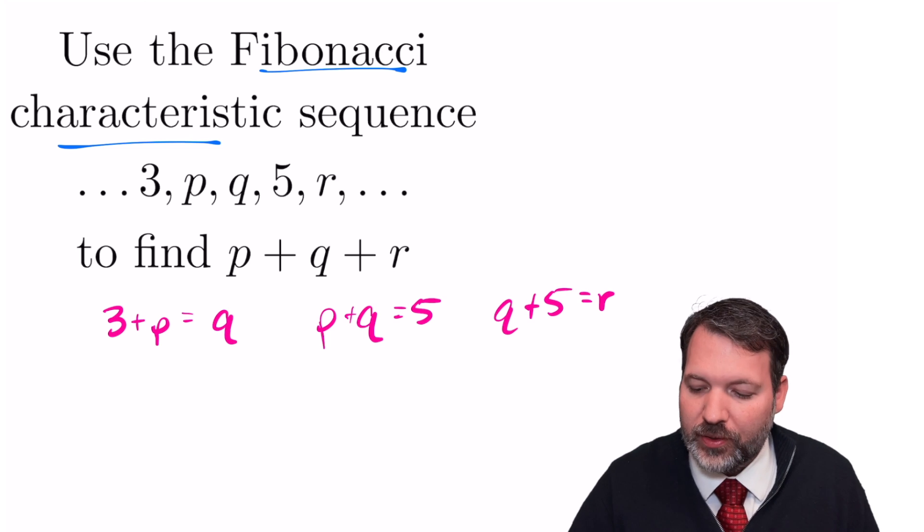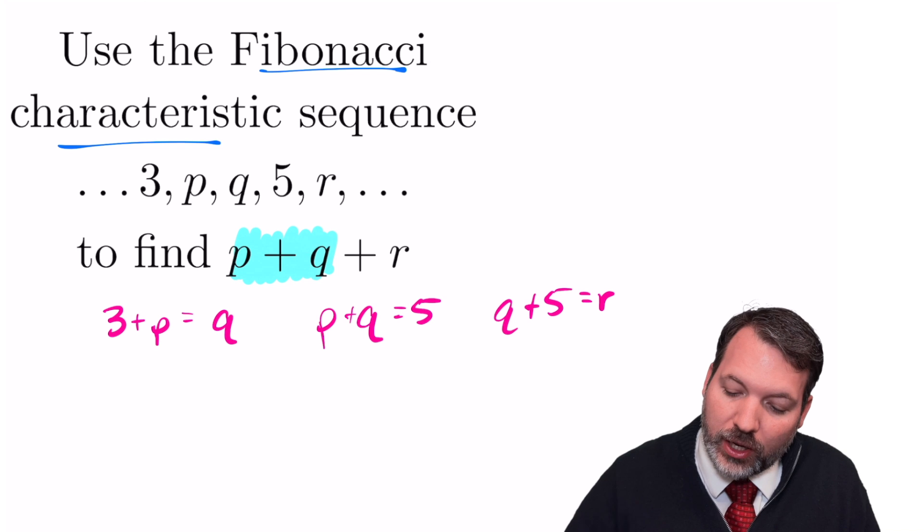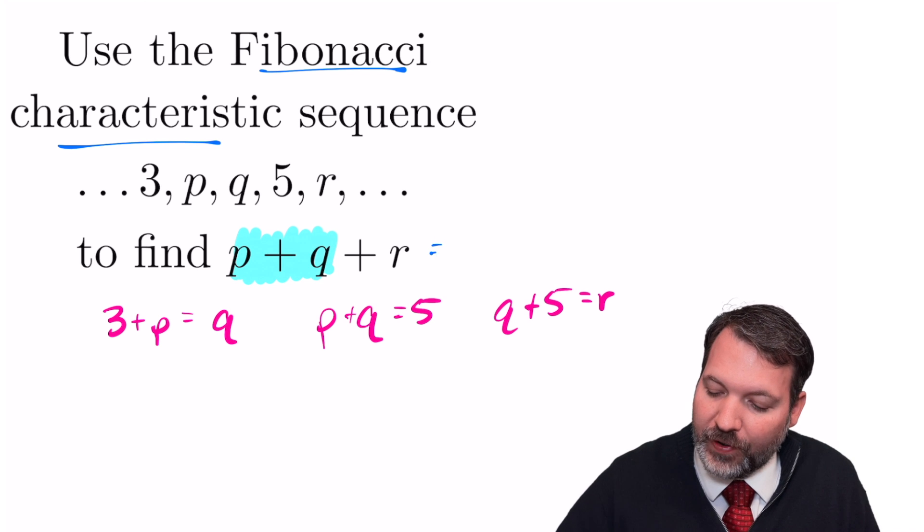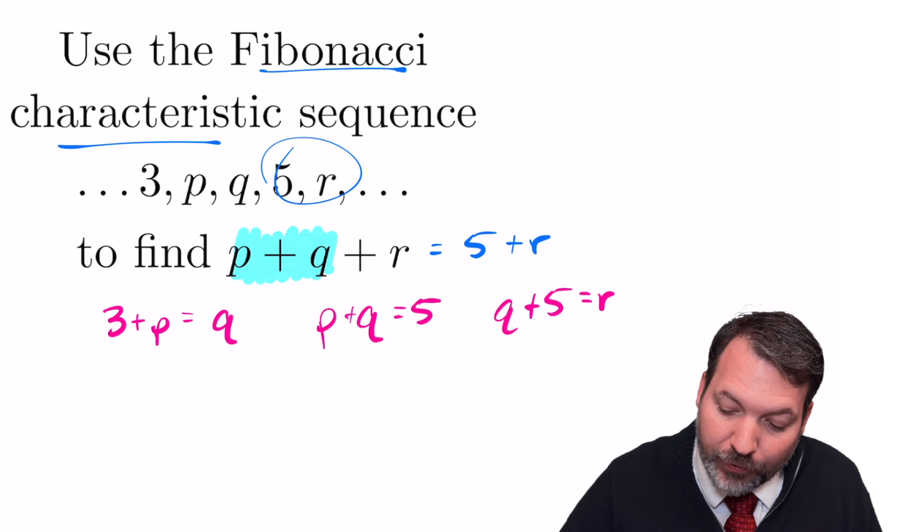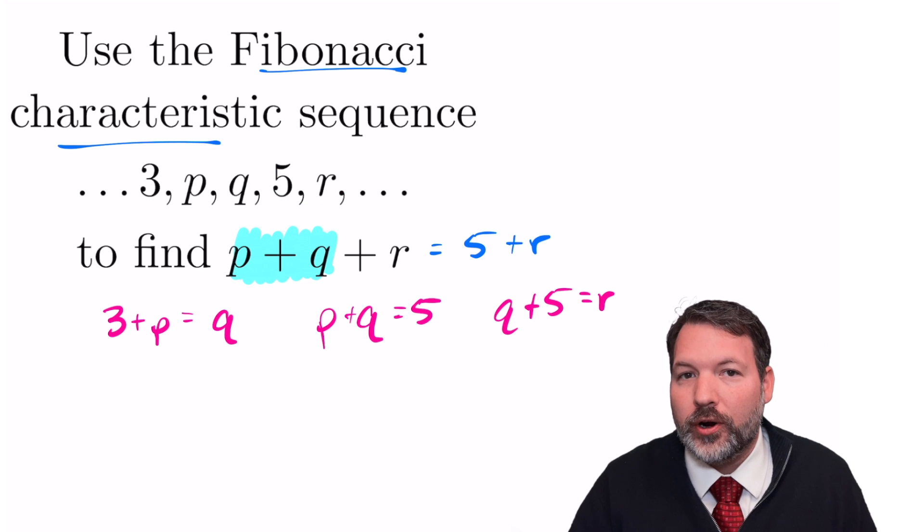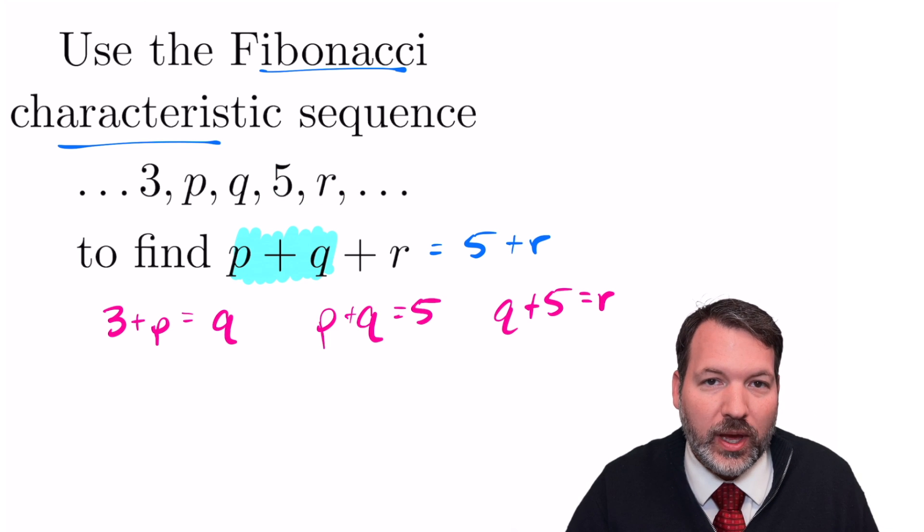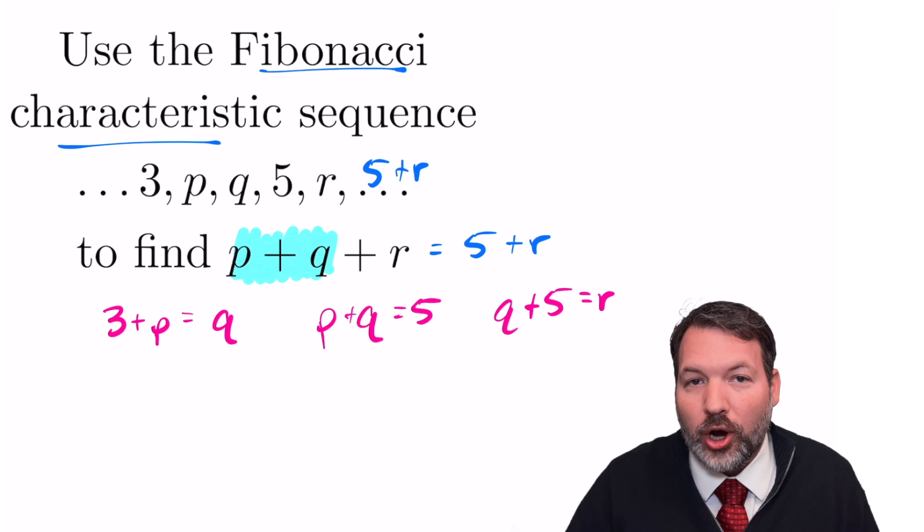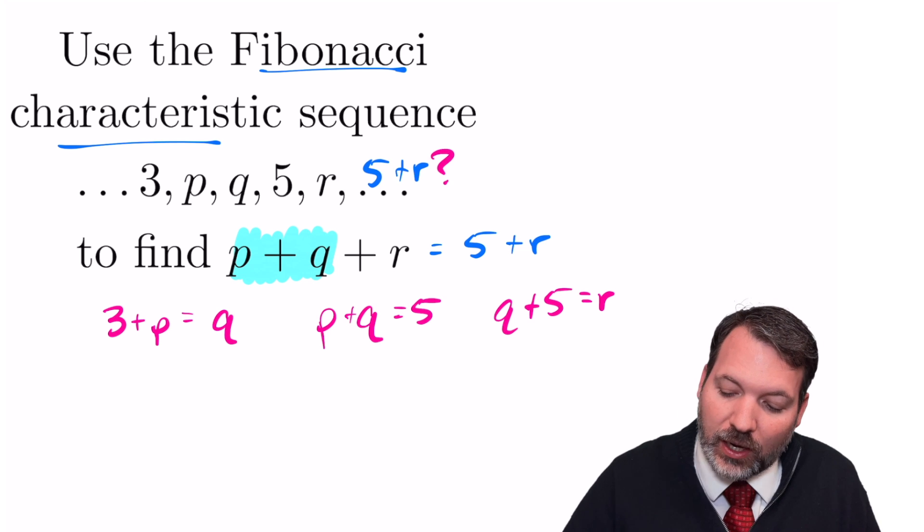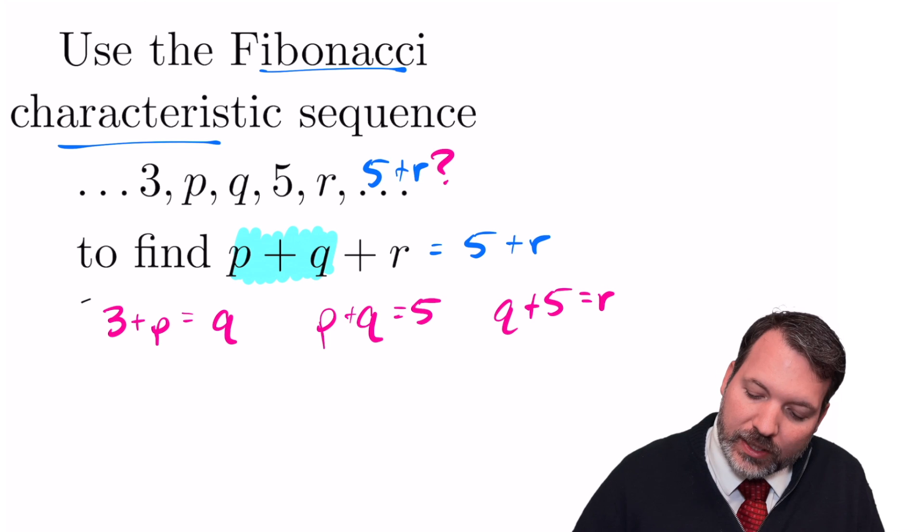At this point, you can tell we can actually simplify the problem a little bit. If we already know that p plus q is equal to 5, this problem is really asking us what's 5 plus r. In fact, even further than that, we can see 5 and r are the last two terms in the sequence we have right now, so the next term in the sequence will be 5 plus r. In fact, they're merely asking us what is that next term in the sequence.